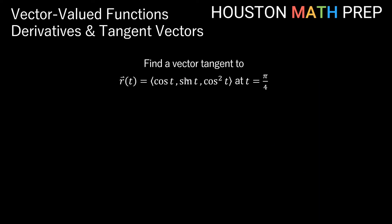We'll do an example. We want to find a vector tangent to the vector-valued function: cosine of t, comma, sine of t, comma, cosine squared of t, at t equals pi over 4. Finding our derivatives: x prime of t, the derivative of cosine of t, is negative sine of t.